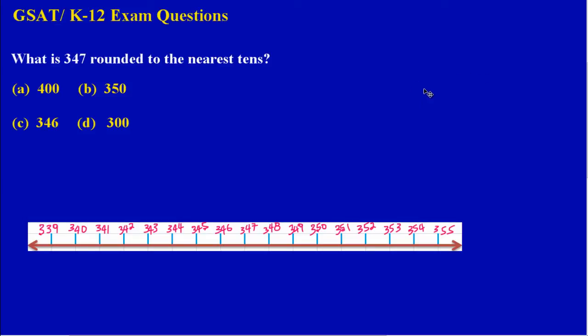Welcome to another past paper GSAT question. Here we are asked: what is 347 rounded to the nearest tens?